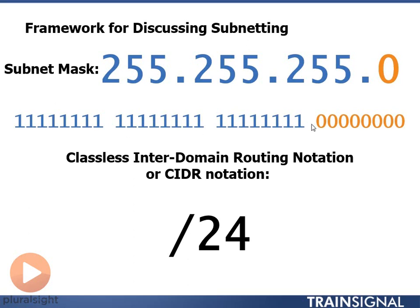If we count the number of bits in our network portion here, there are 24. So slash 24 and 255.255.255.0 are interchangeable — all we're doing is counting the number of bits. From now on, I'm only going to write the subnet mask in CIDR notation. It makes converting to binary easier because all you have to do is write 24 ones and fill the rest with zeros. Every address has 32 bits, so 24 bits of network portion and 8 bits of host portion.